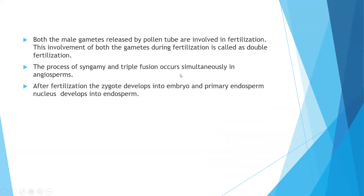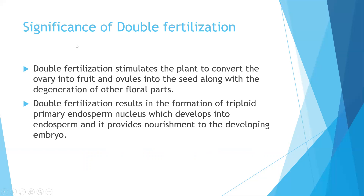The processes of syngamy and triple fusion occur simultaneously in angiosperms. After fertilization, the zygote develops into the embryo and the primary endosperm nucleus develops into the endosperm. The significance of double fertilization is that it stimulates the plant to convert the ovary into fruit and ovules into seeds, along with the degeneration of other floral parts. Double fertilization also results in the formation of the triploid primary endosperm nucleus, which develops into the endosperm and provides nutrition to the developing embryo.